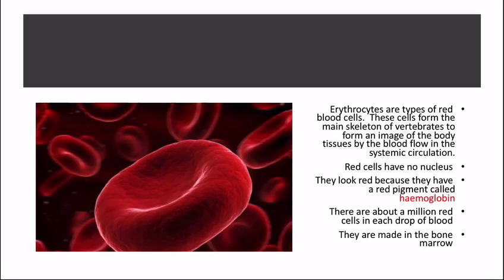They look red because they have a red pigment called hemoglobin. There are about a million red cells in each drop of blood. They are made in the bone marrow.